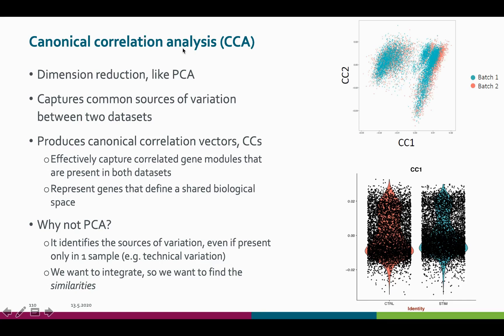Canonical correlation analysis, or CCA, is yet another dimension reduction method, like PCA. But unlike in PCA, we are not trying to find the directions where there is most variance in the data, but rather capture the common sources of variation between the datasets. Instead of principal component vectors, we get canonical correlation vectors as a result. These vectors represent the genes that best define the shared biological space between the samples.